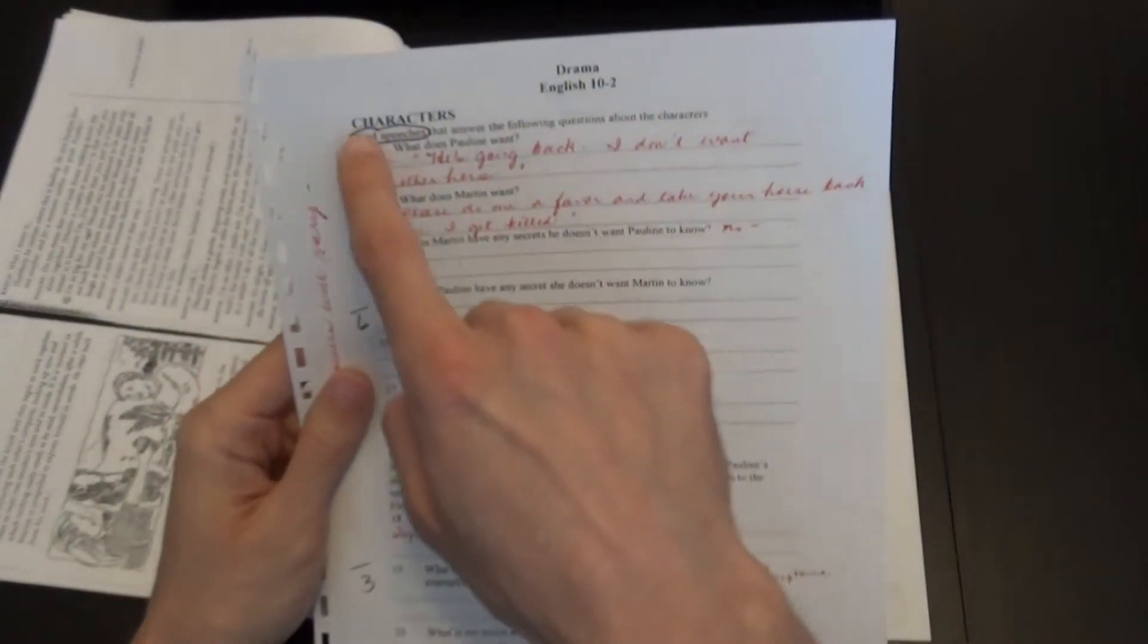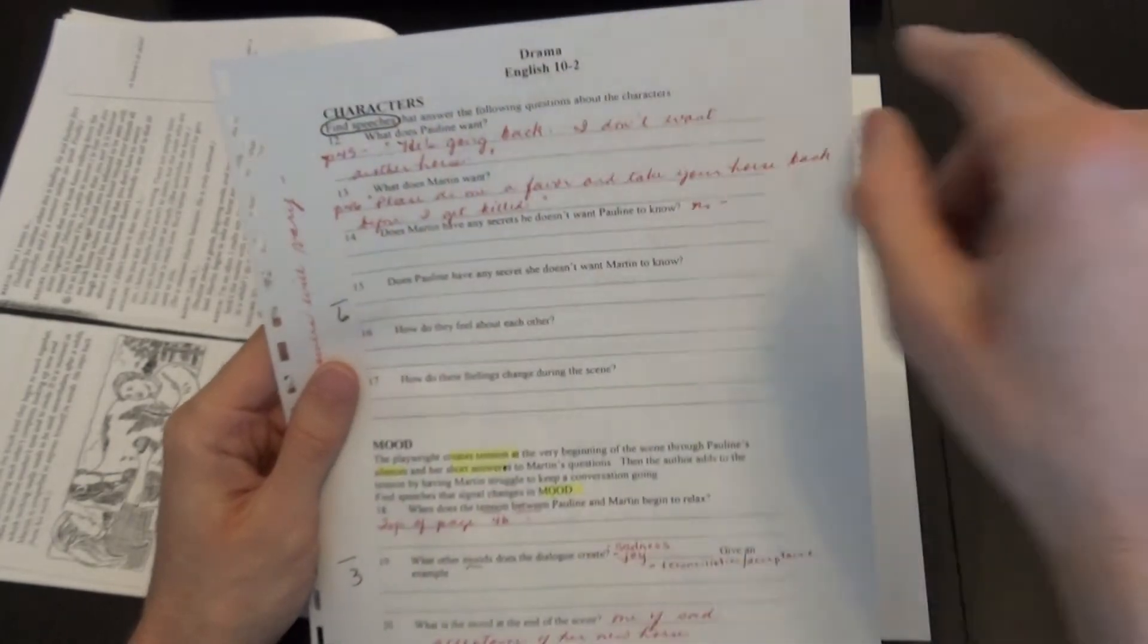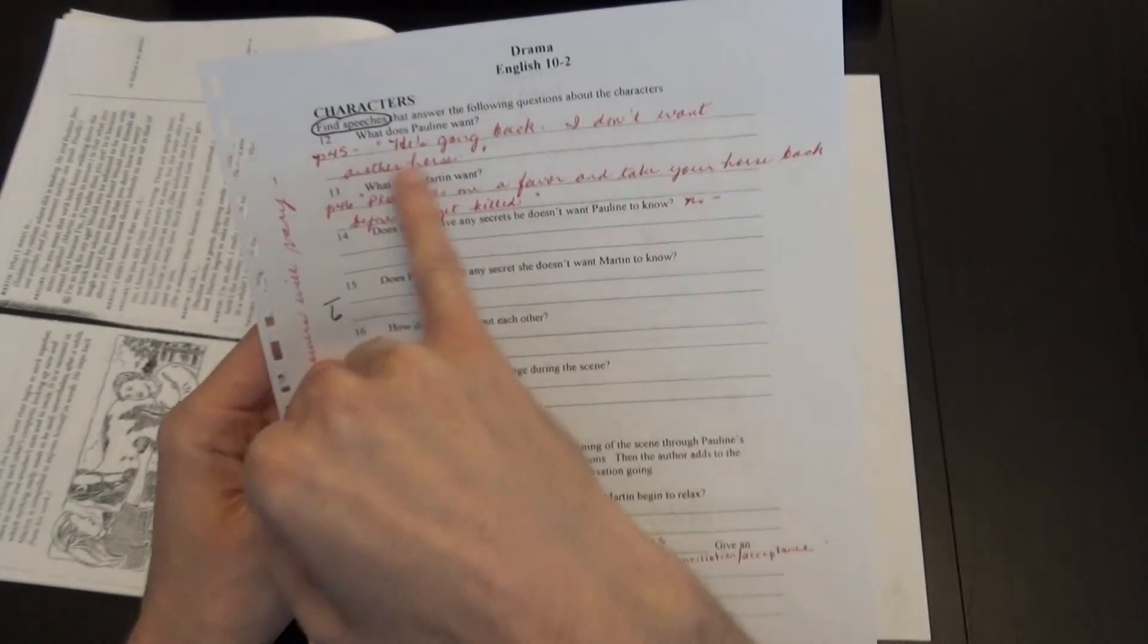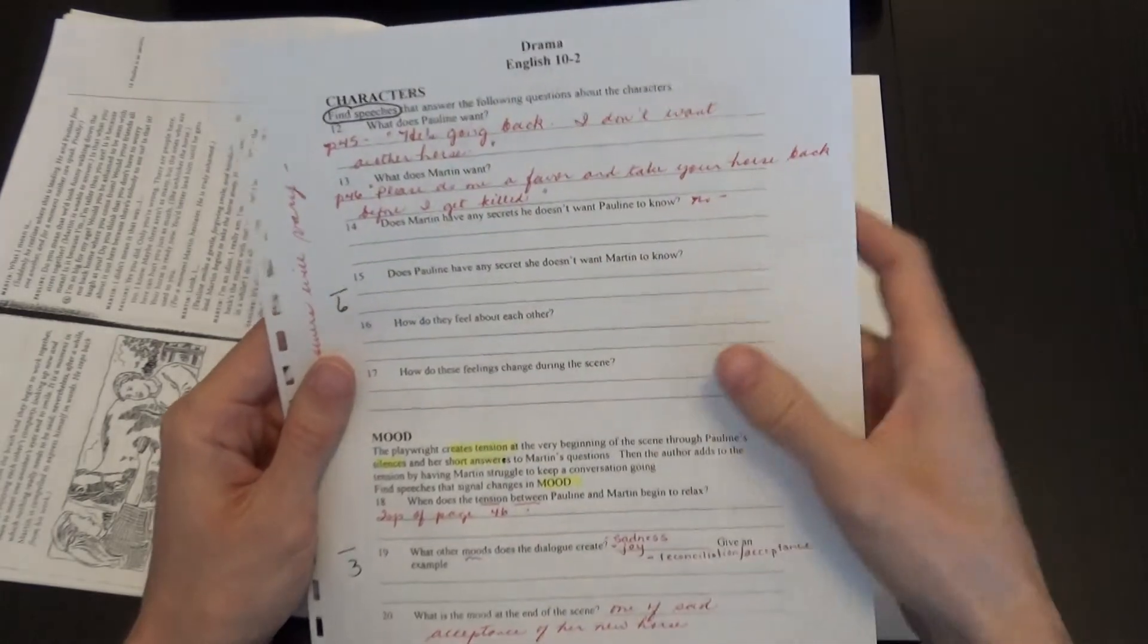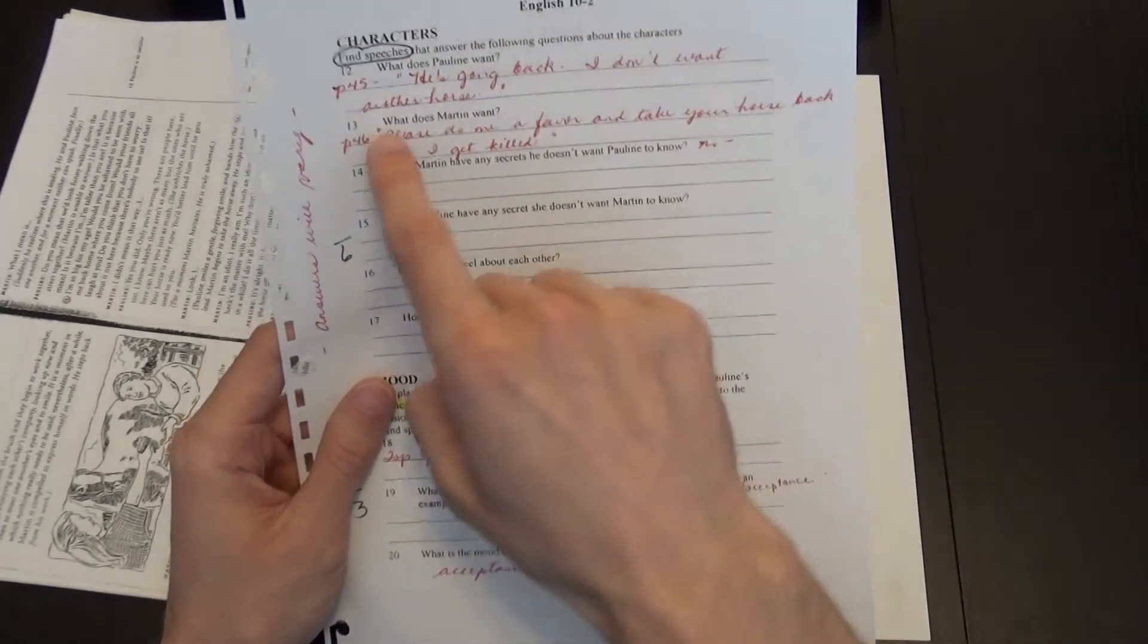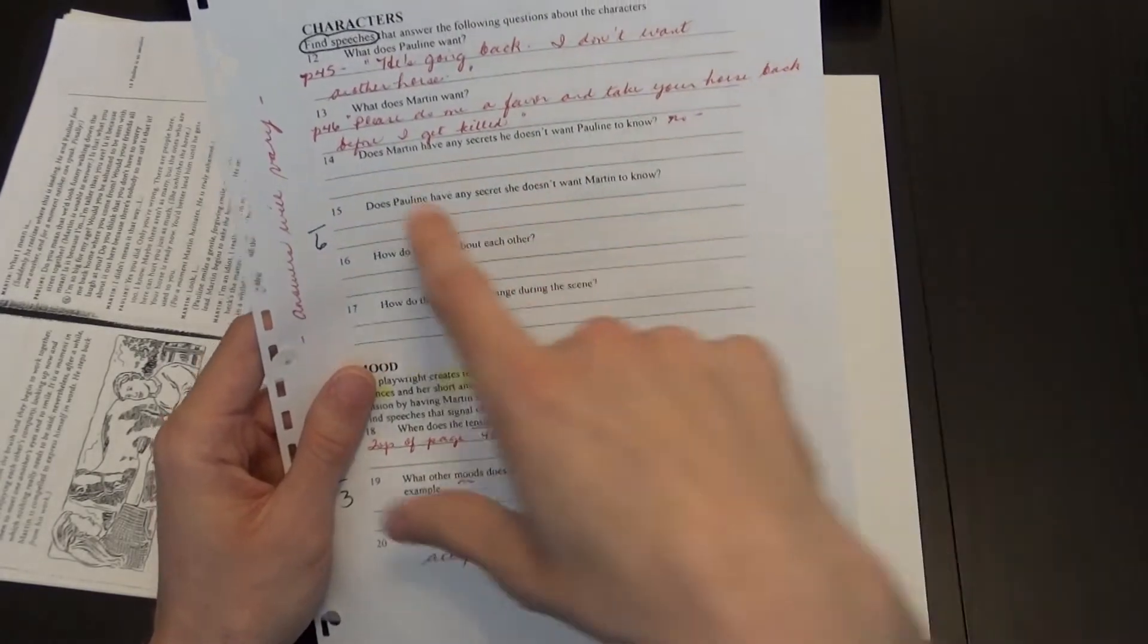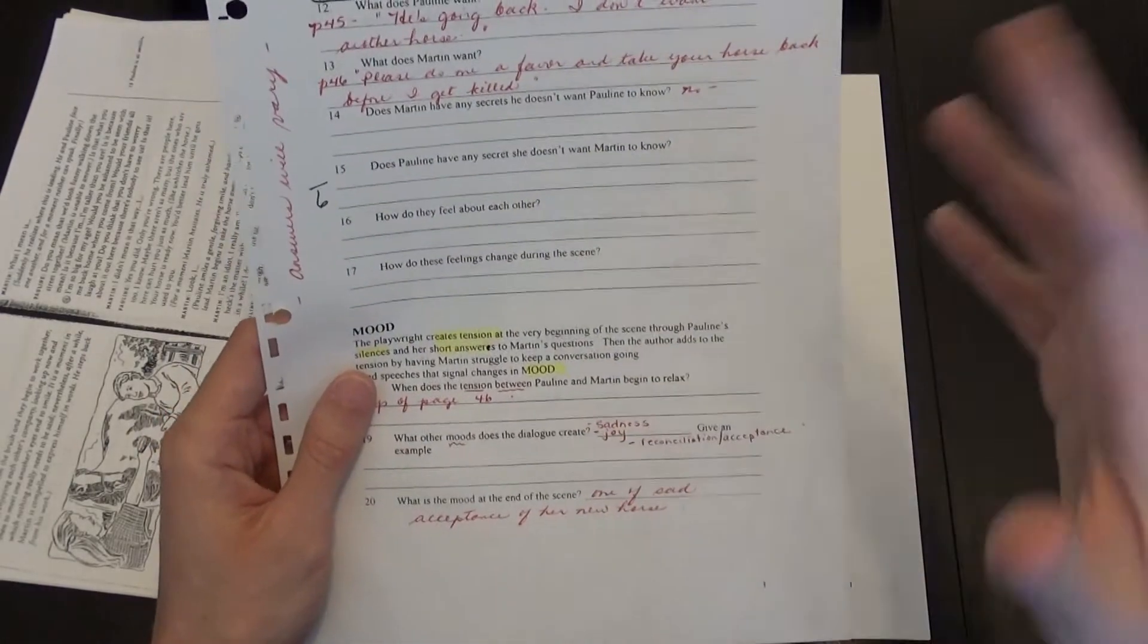Then question 12, find speeches to answer these ones. So what does Pauline want? Well, 'he's going back. I don't want another horse.' So she wants her horse Stanley, not another one. And for question 13, what does Martin want? Well, he wants her to keep the horse. 'Please do me a favor and take your horse back.' So he doesn't really want it.